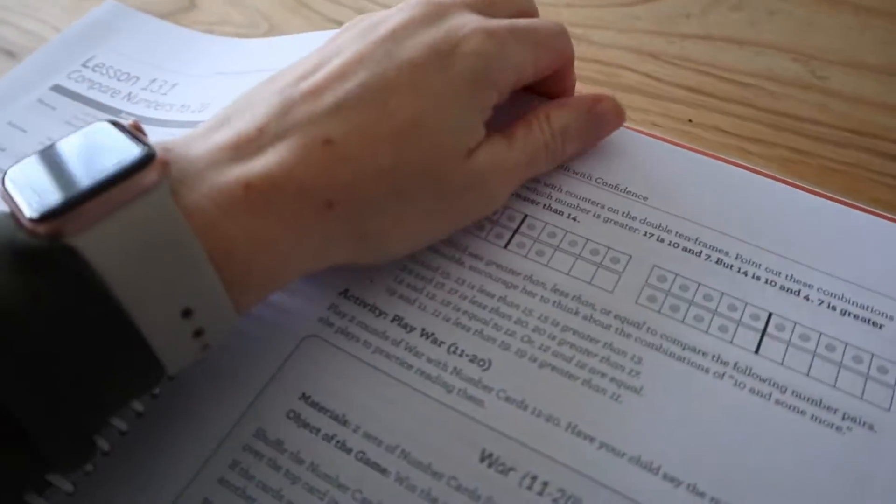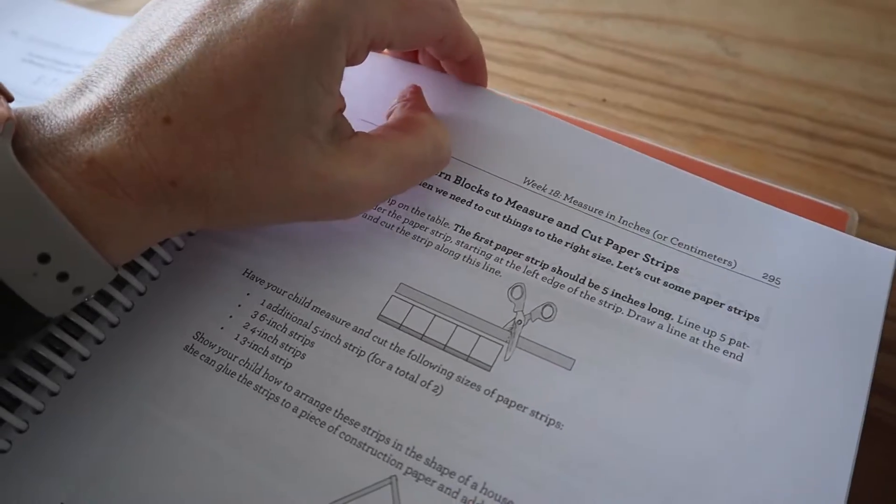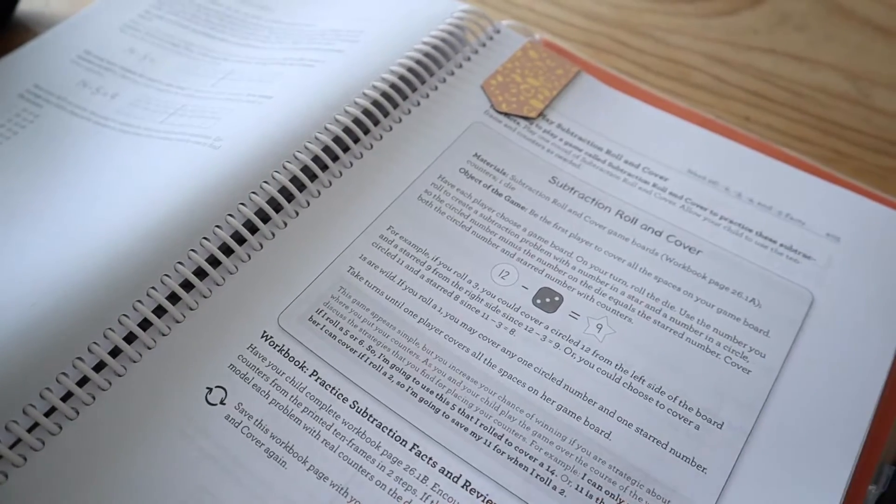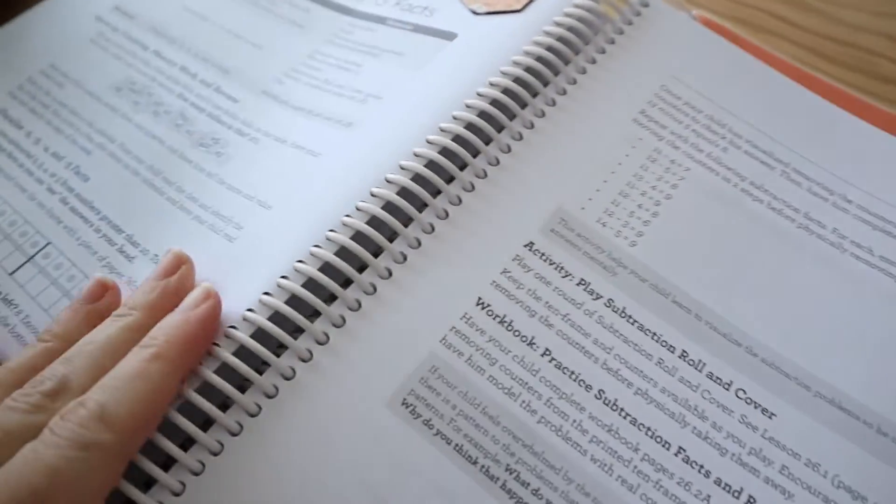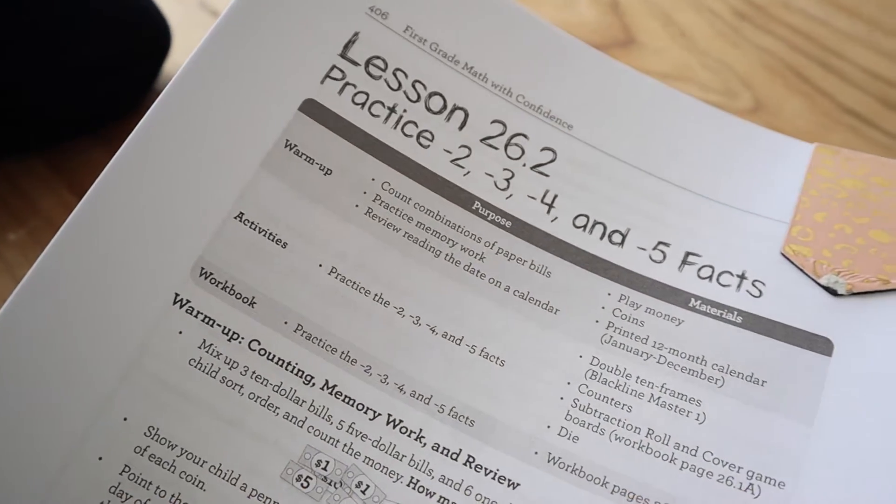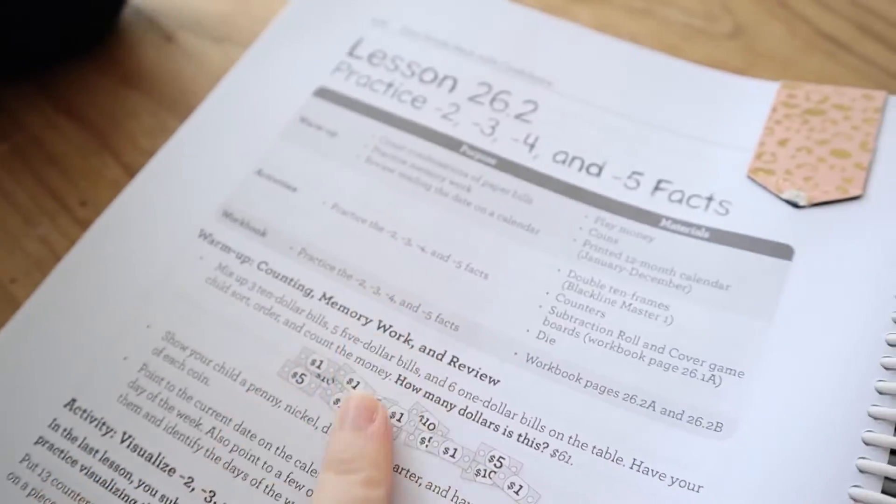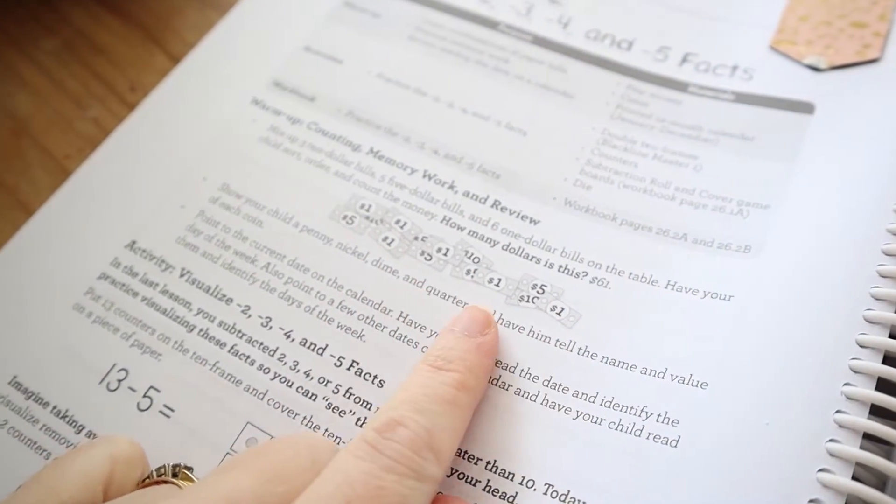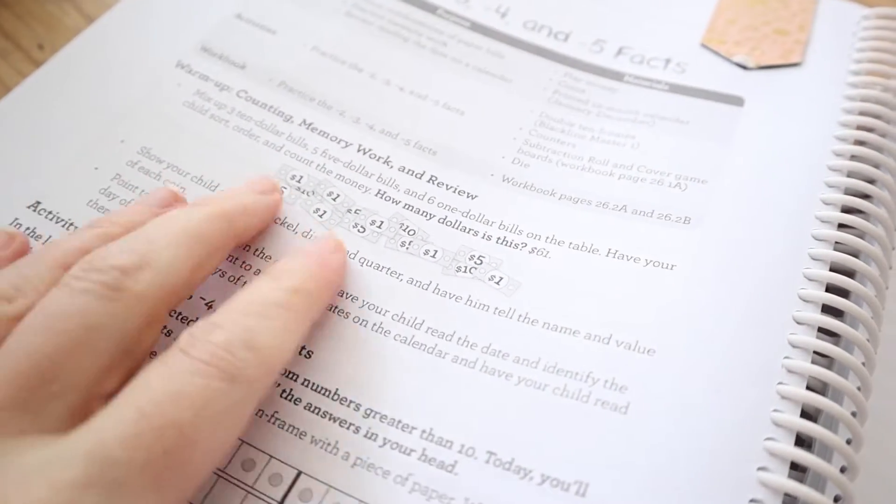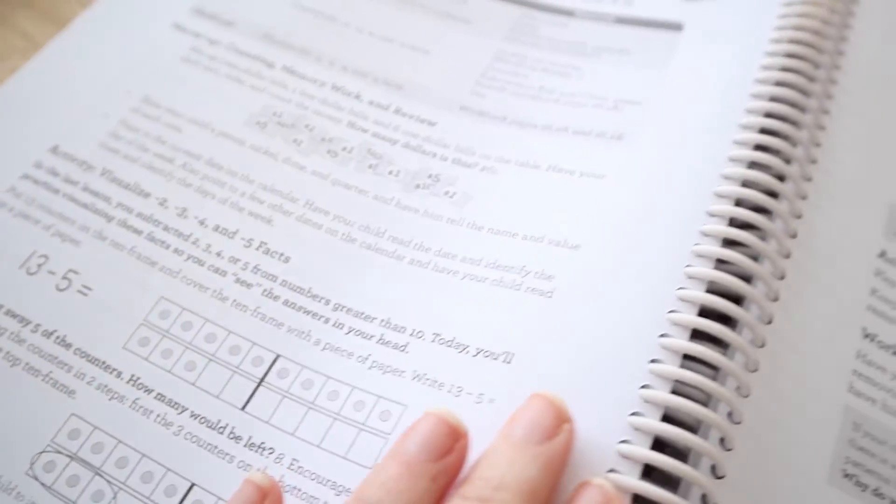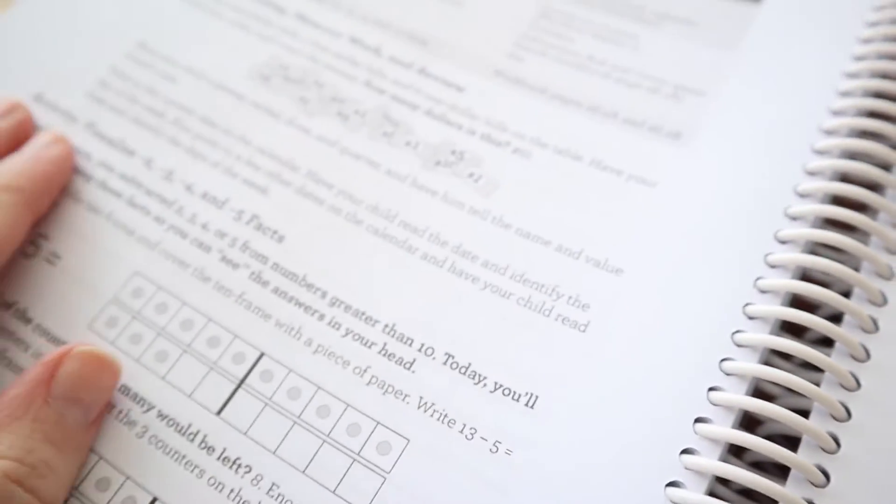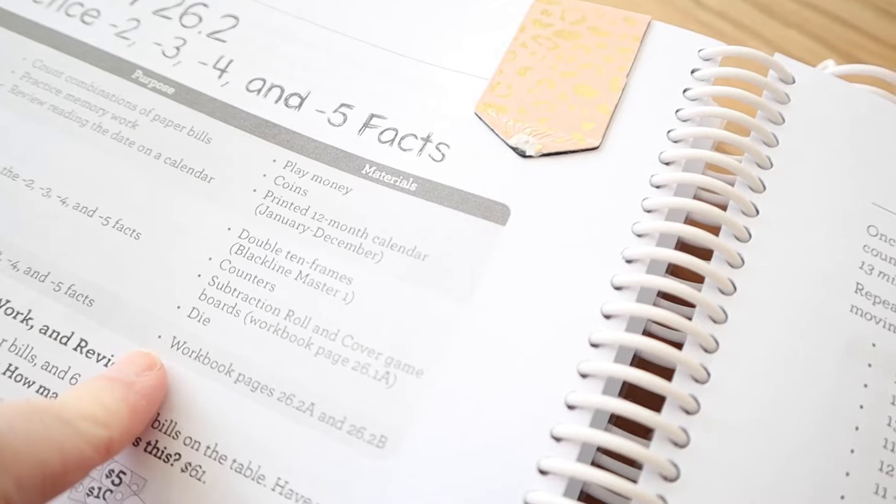Okay, so we've got our teacher's manual here and I'm just going to find our spot. I keep it marked with a bookmark so that it's simple to find where we are. So we're up to lesson 26.2 and it's got the overview there of what we're going to be covering today. Warm up. Probably not going to do that because she's pretty good with that. Some of this is like American money. Show your child a penny, nickel and dime, but we go over our own money as well here in New Zealand. And then there's some calendar practice there. So we're pretty good with all those things.